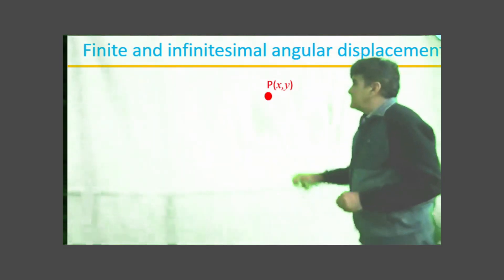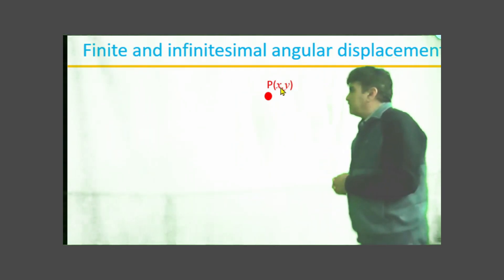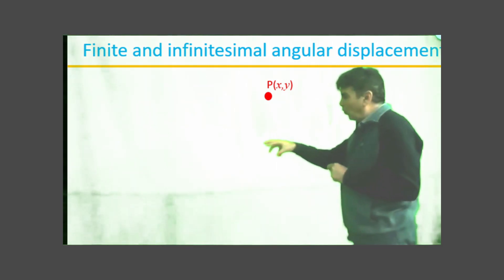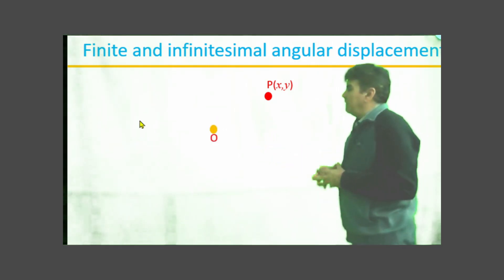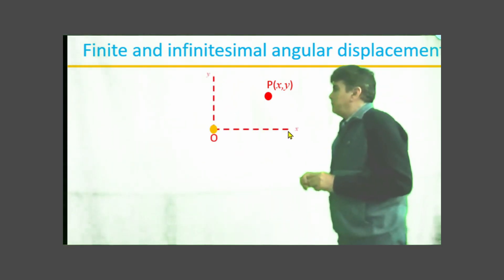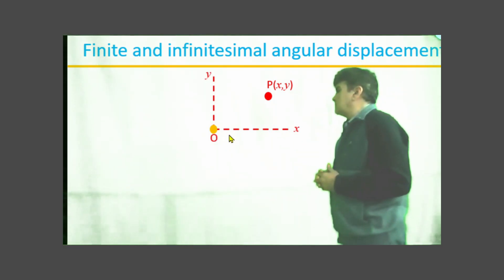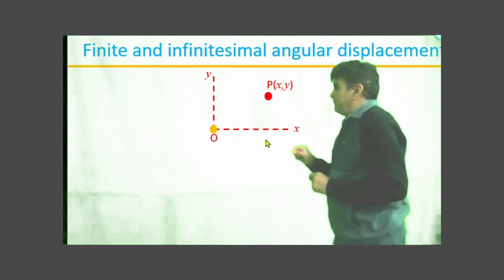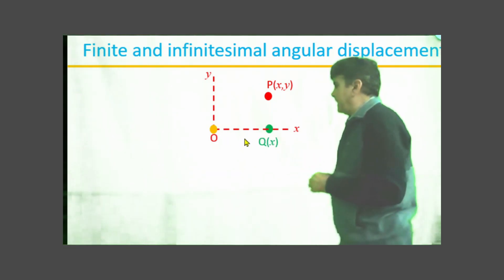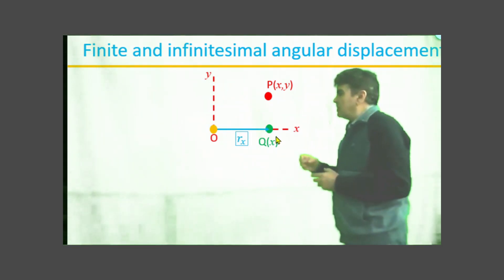Let us consider a point P in the xy plane with coordinates x and y. In order to locate its position I consider a reference point O in the same plane. From O I can reach point P by different paths. For example, from O I can move to point Qx with a finite displacement R_x and from Q to P with a finite displacement R_y.